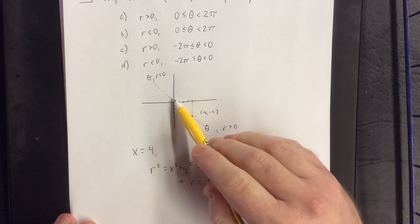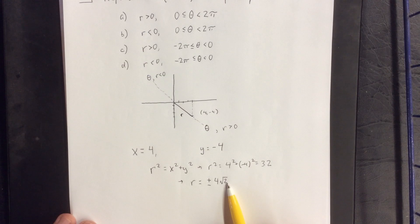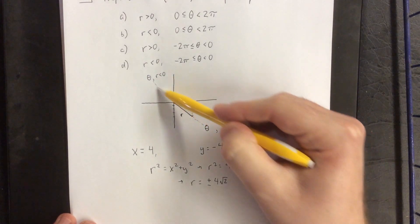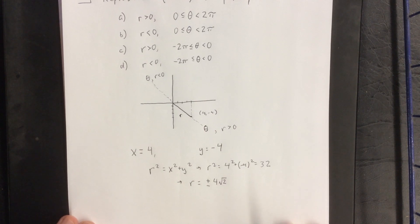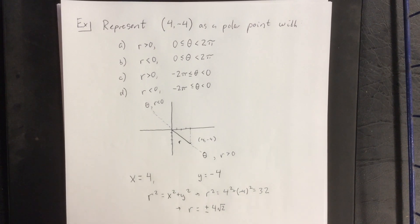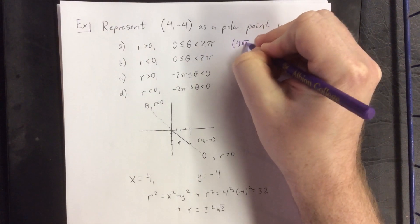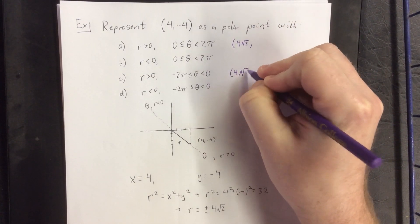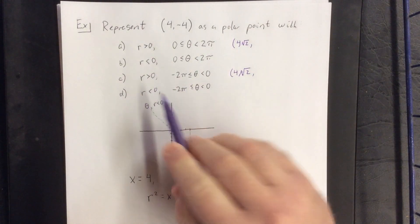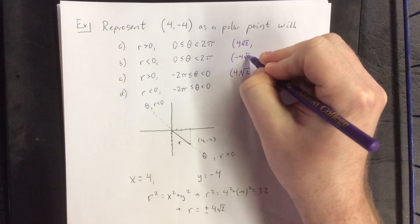Going into quadrant 4, we'd be using r equal to positive 4 square roots of 2, and in the quadrant 2 direction, that would be negative 4 square roots of 2. So in the event that I want to represent this using a positive r value, I'll use 4 square roots of 2. In the event that I want a negative value for r, that will be negative 4 square roots of 2.